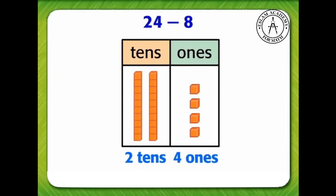Next, subtract the 1s. We need to take away 8 1s from 24. There are 4 1s in 24. There are not enough 1s to subtract. We need to regroup.